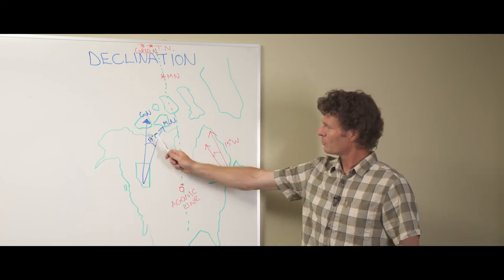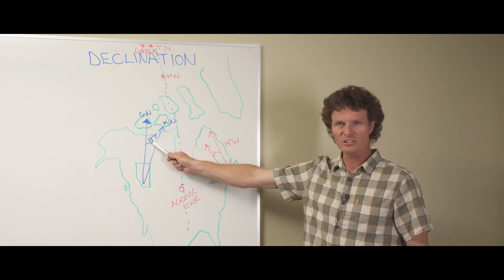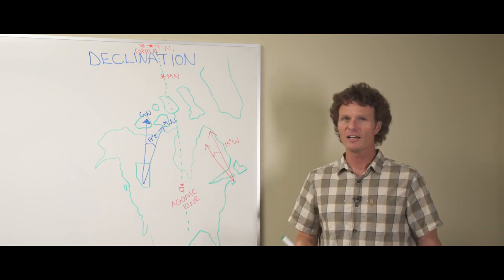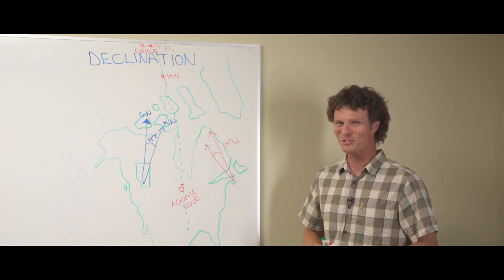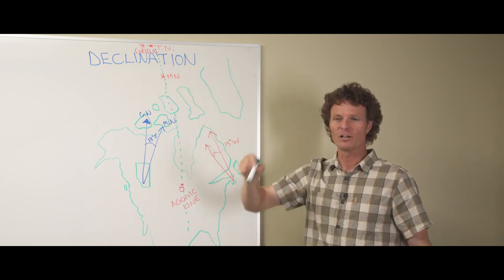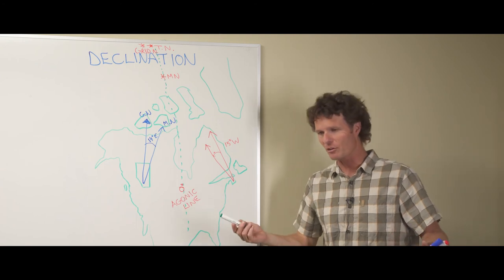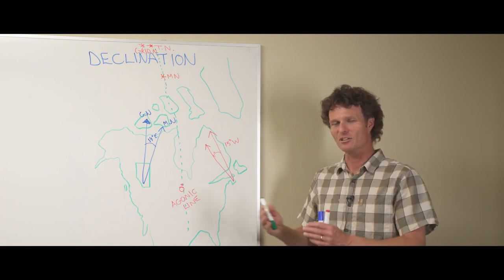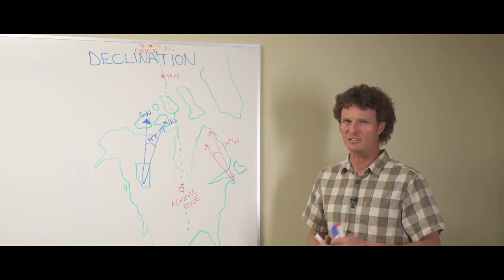To figure out what your declination is in your area, the best thing to do is to go online and Google, yes, Mr. Google, Google your magnetic declination for your area that you're going to. So let's say you're going to Canmore. Just say magnetic declination, Canmore, and it will give you the declination up to date.